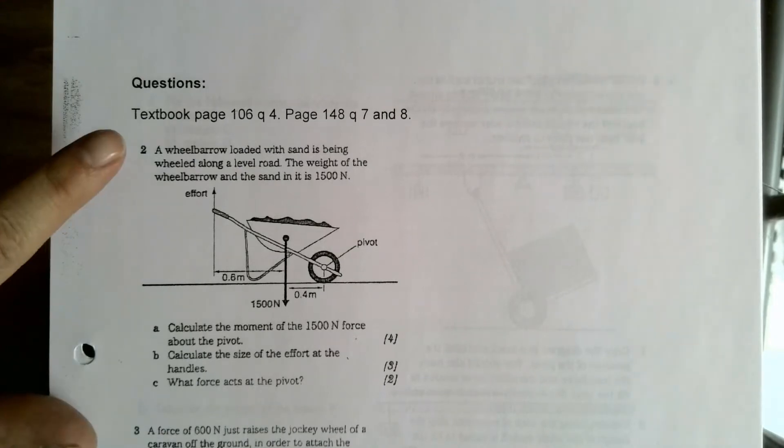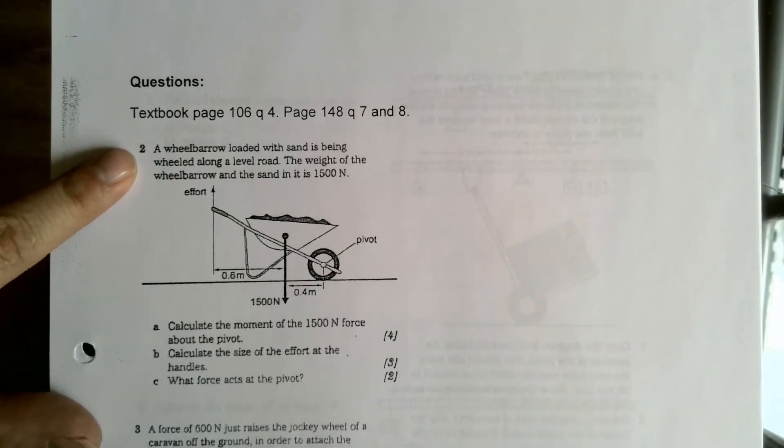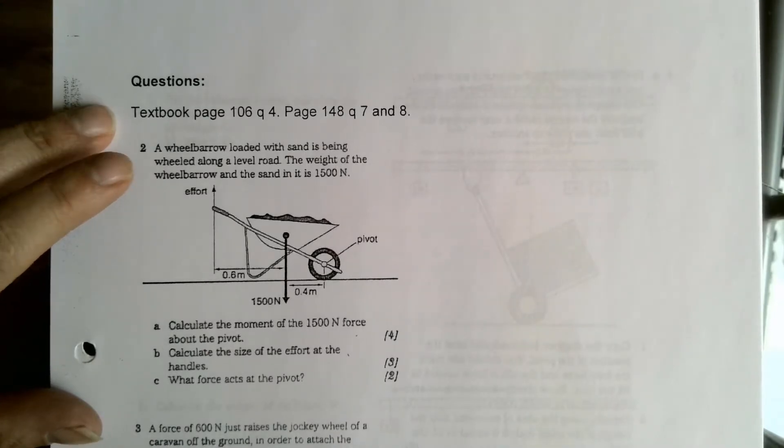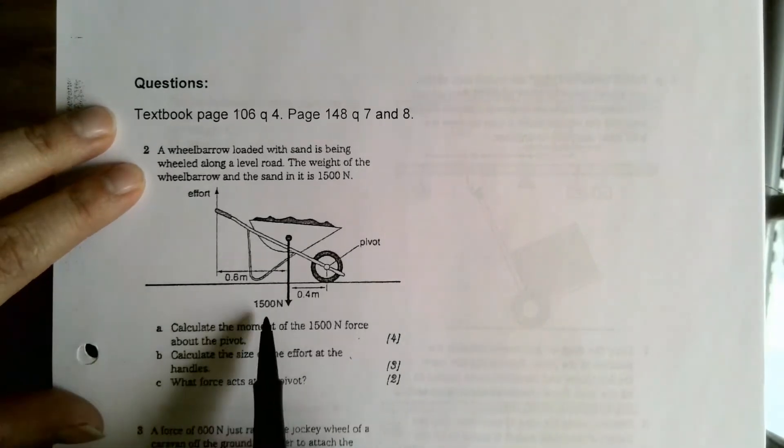Okay, so I'm on page 233. Hopefully you already have these done. Number two: a wheelbarrow loaded with sand is wheeled along a level road. The weight of the wheelbarrow and the sand in it is 1500 newtons, and that is shown on this diagram here.